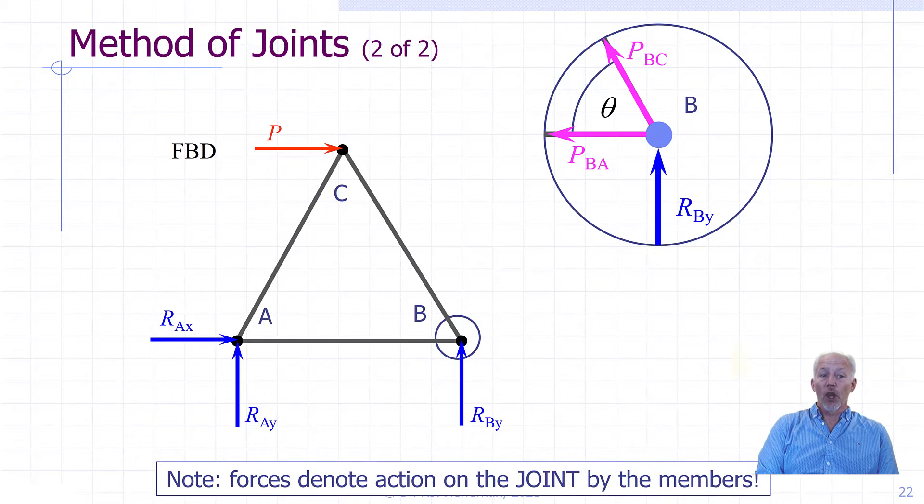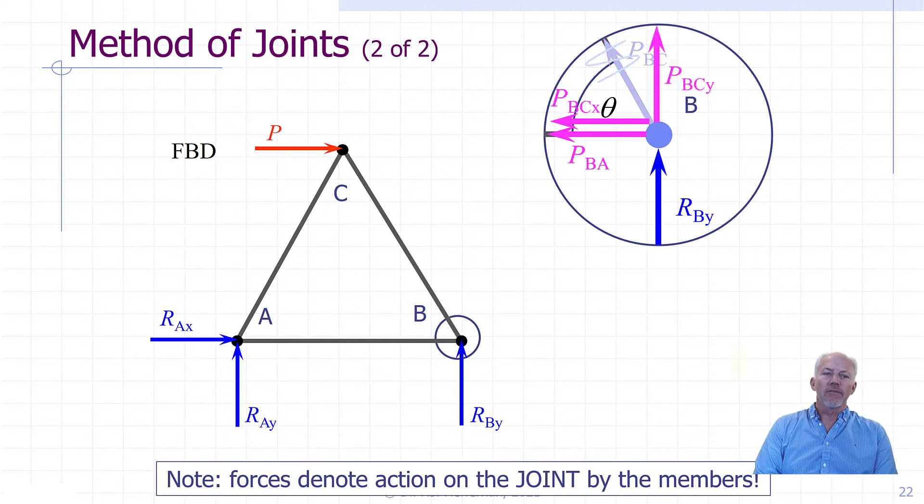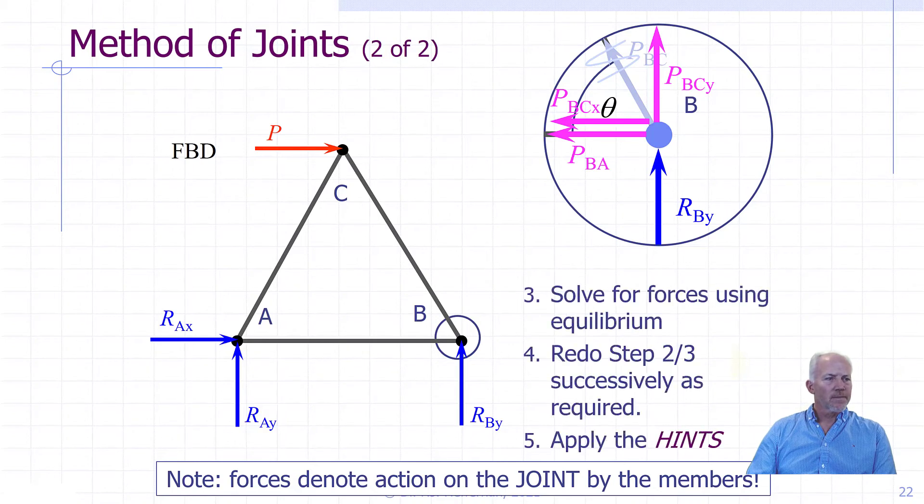Note, forces denote actions on the joint by the members, not forces acting on the members by the joint. We can then break any angled forces into its x and y components, use the equations of equilibrium to determine the values of the internal forces. These forces can then be transferred to the members, and then from the members equal and opposite to the joints at the other end of the members. We'll redo steps two and three successively as required on neighboring joints until the essential forces are determined.